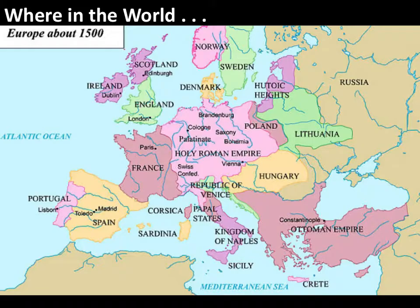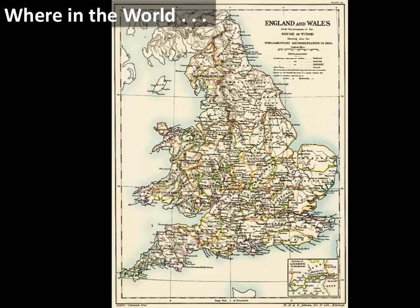So where are we talking about? We've been talking in the previous lectures about what's been going on in the mainland of Europe, but for this lecture we're going to be looking specifically at what's going on in Britain. The map of England and Wales and Scotland has looked pretty much the same for quite a long time — this is a map from 1654, but obviously the island is the island.